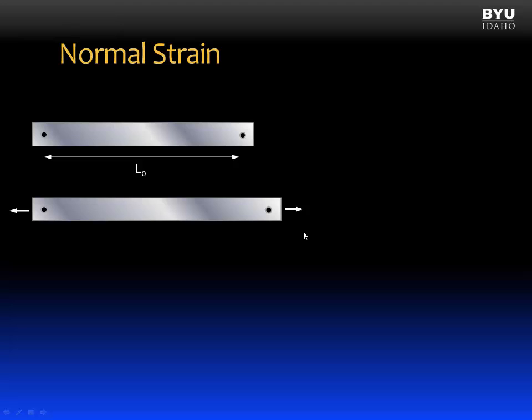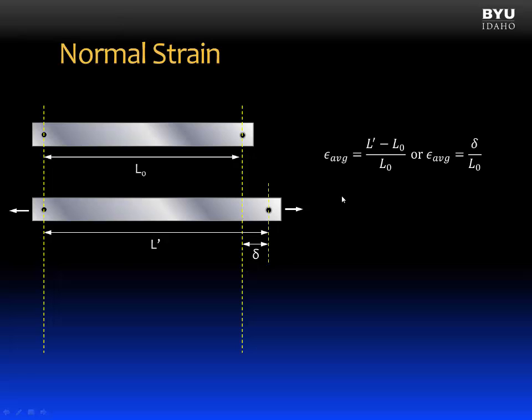What's going to happen to those two dots? They're going to move apart. And the new distance between those two points is L-prime. And the change in the distance between those two points we're going to call delta. This is the Greek letter delta.